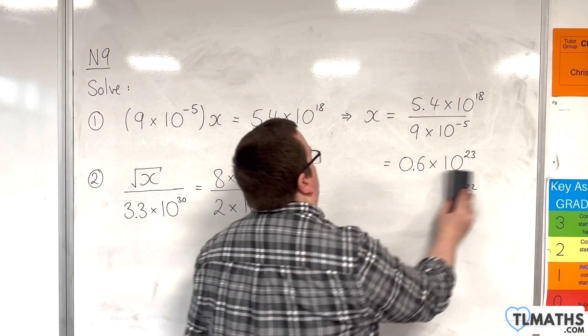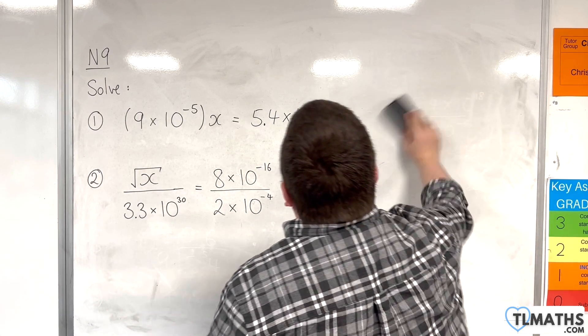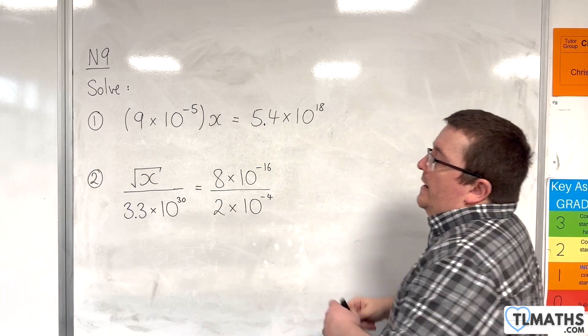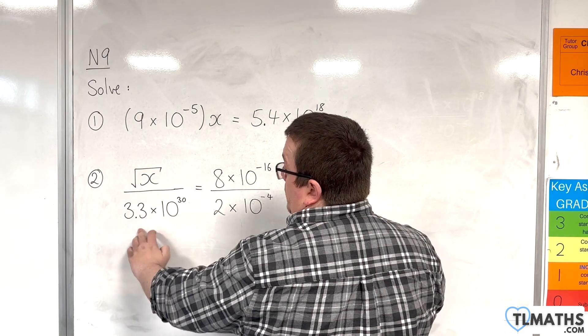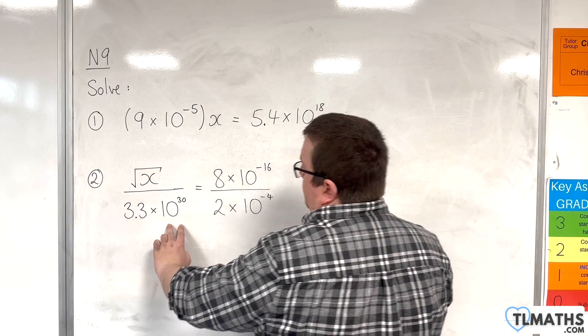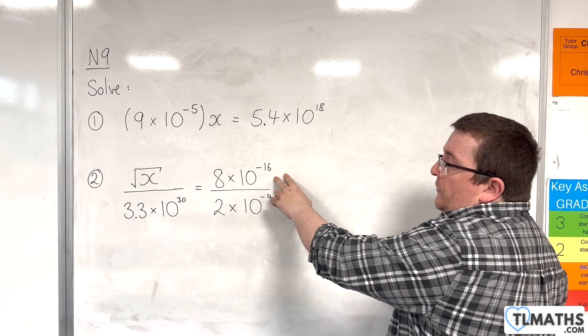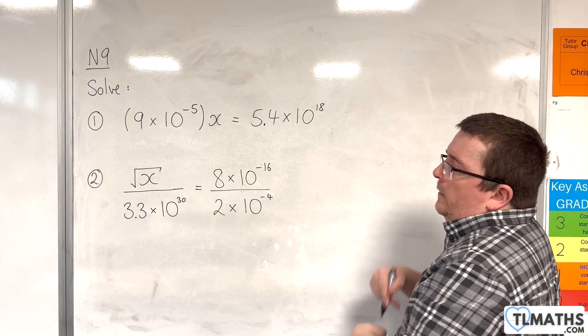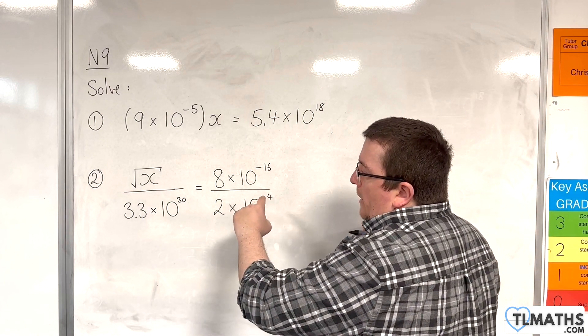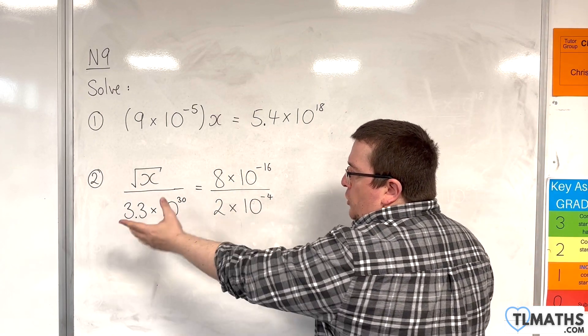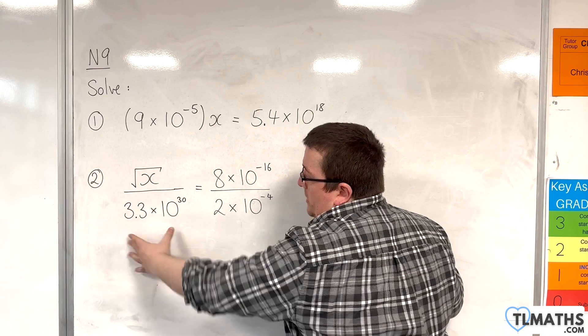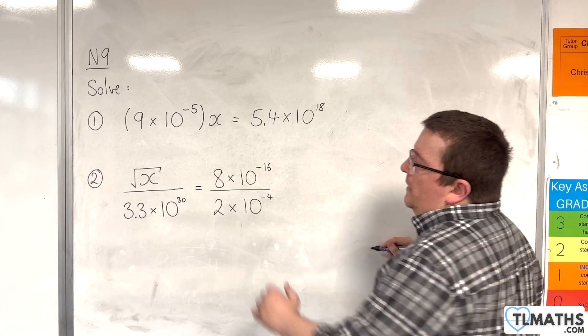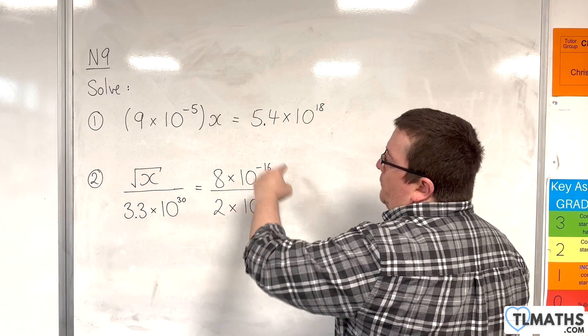Right. Okay. Now, our second example. We have the square root of x divided by 3.3 times 10 to the 30 is equal to 8 times 10 to the minus 16 divided by 2 times 10 to the minus 4. So, the first thing I'm going to do is I'm going to simplify the right-hand side. I could multiply both sides by 3.3 times 10 to the 30, but it's probably going to make it look a little bit messy. So, I'll deal with the right-hand side first.